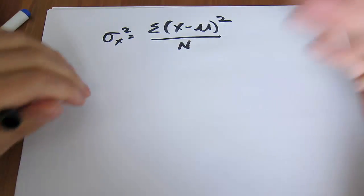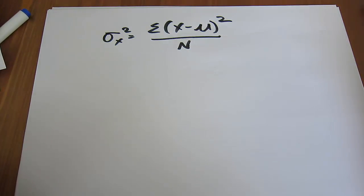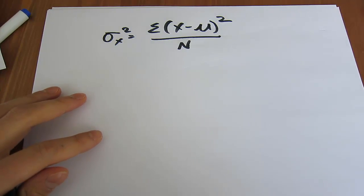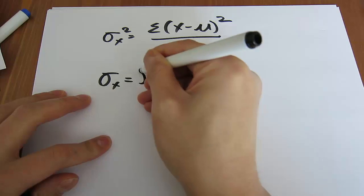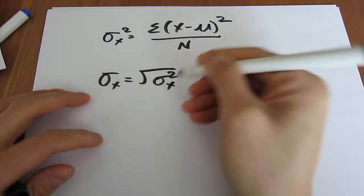This is the population variance formula. And then we have the standard deviation formula as well, right? The standard deviation is simply the square root of the variance.